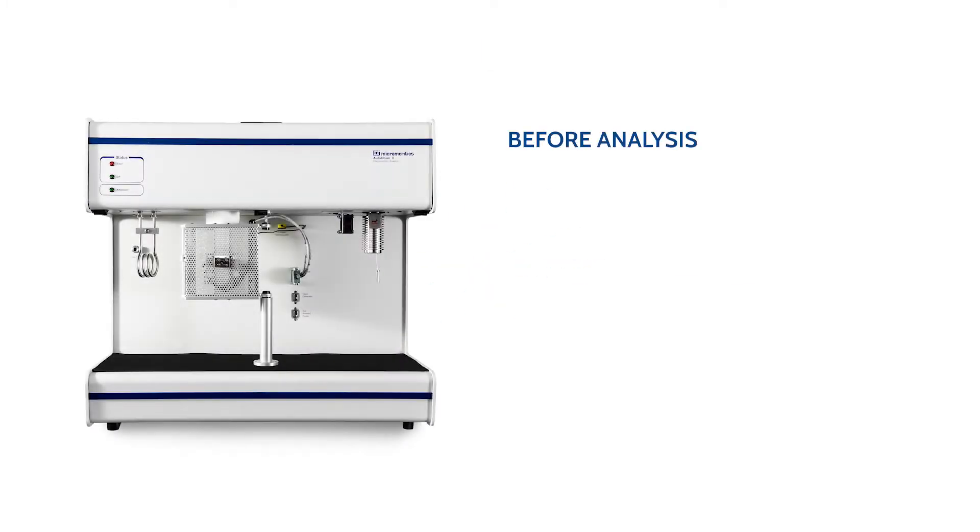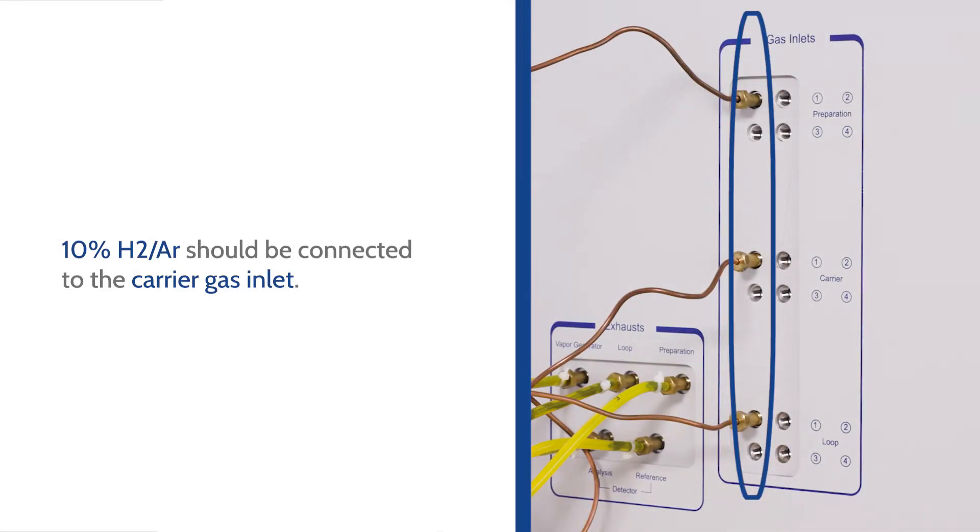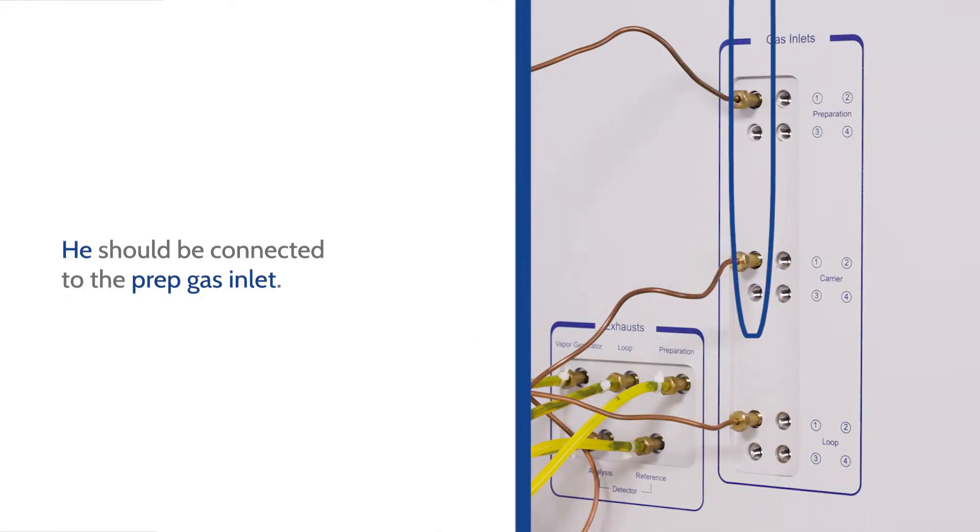There are three things that need to be completed for this analysis. First, the appropriate gases need to be connected to the instrument. 10% hydrogen argon should be connected to the carrier gas inlet and helium to the prep gas inlet.